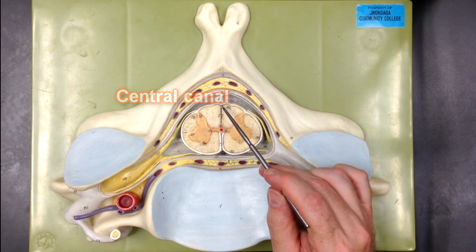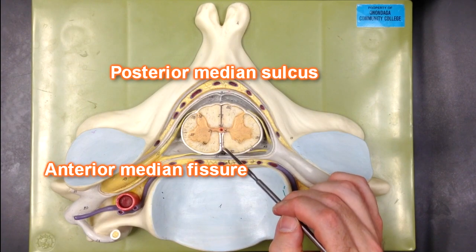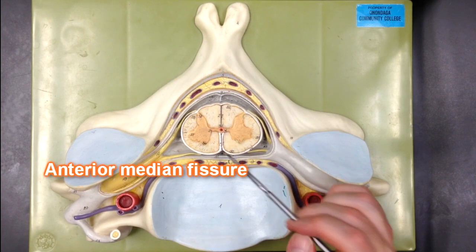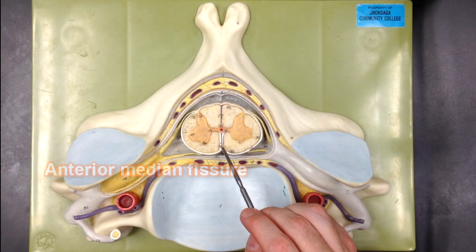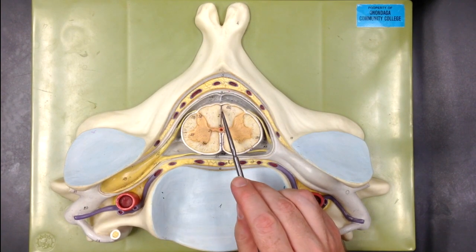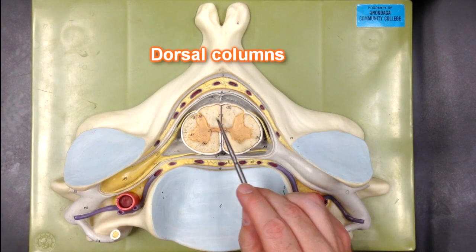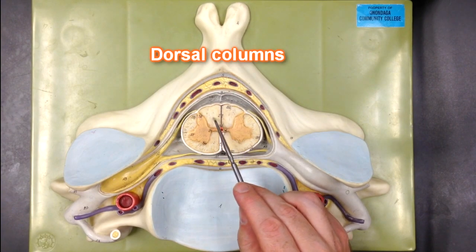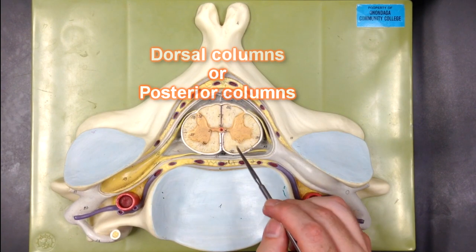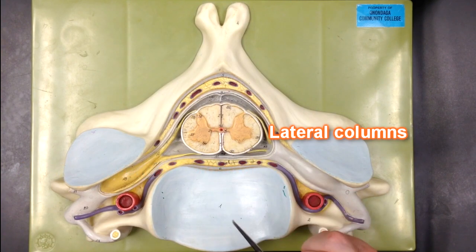This would be the posterior median sulcus, and this right here would be the anterior median fissure. It's called a fissure because it's wider than the sulcus. The posterior median sulcus separates the two clumps of white matter, which are the posterior columns. The anterior columns are in the front and the lateral columns are on the side.